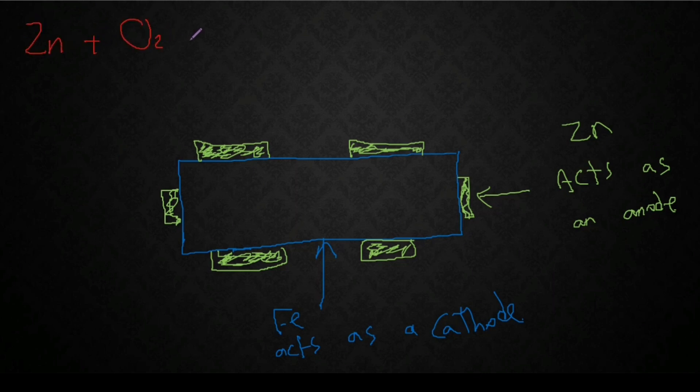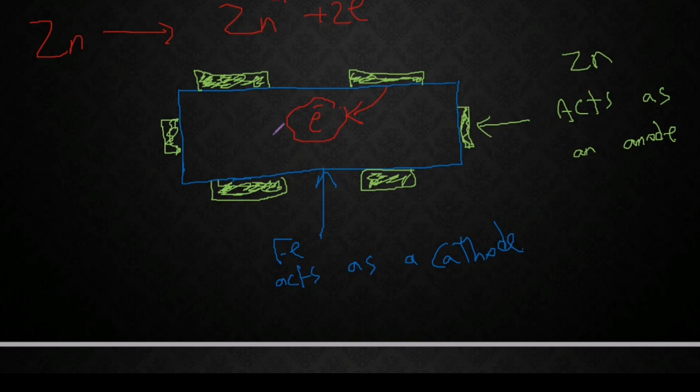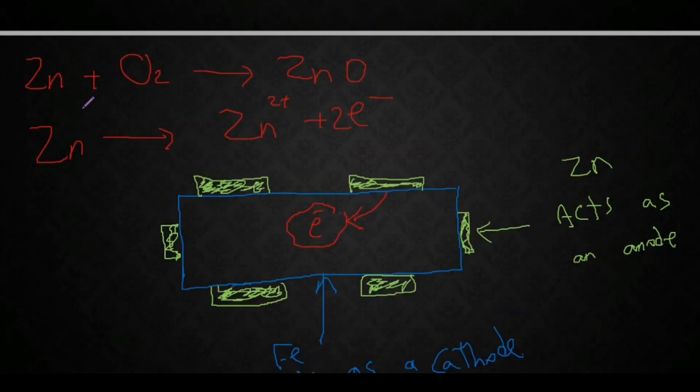Zinc will react with oxygen to produce zinc oxide. So this is also a redox reaction because zinc is oxidized into Zn2+ releasing two electrons. These electrons guys will be pushed onto the surface of the iron. So now iron has already made electrons to protect its own electrons from being taken or from being reacting with the oxygen. So this is a sacrificial metal, zinc.